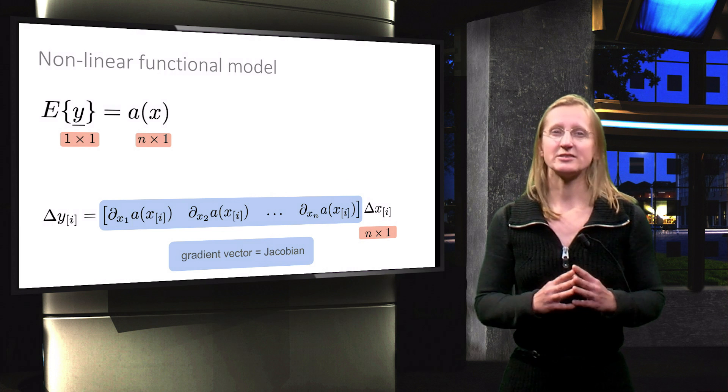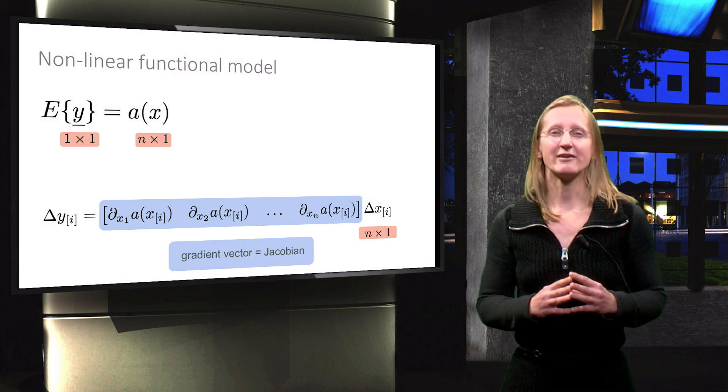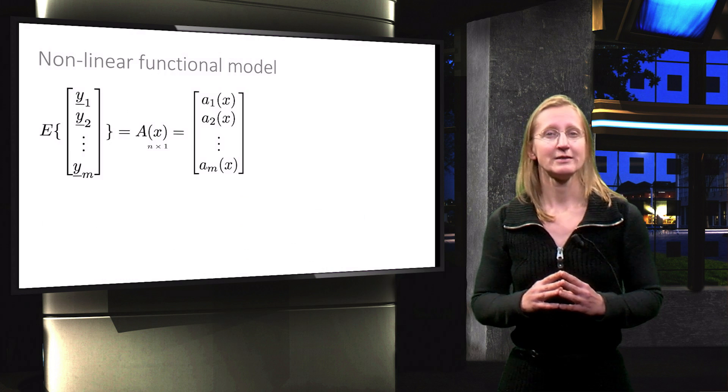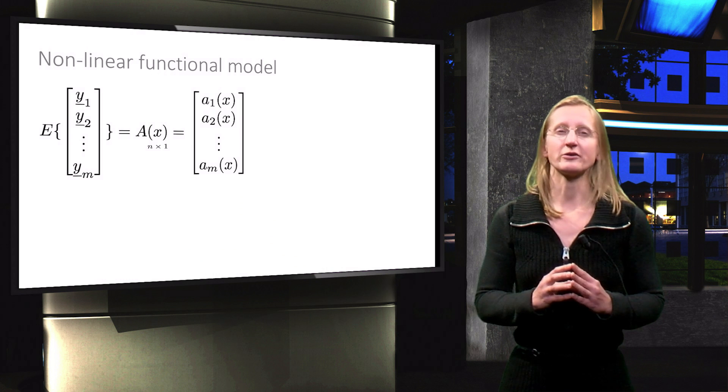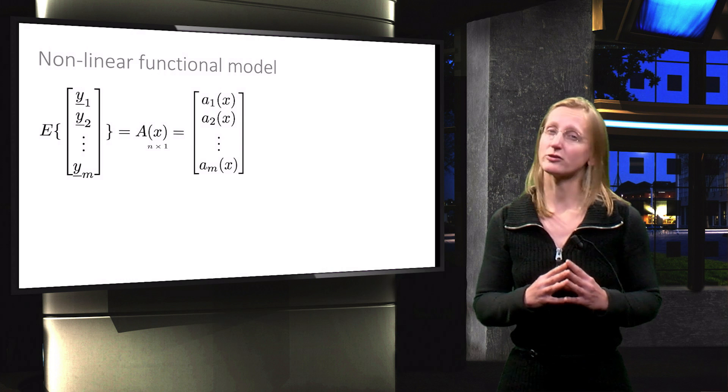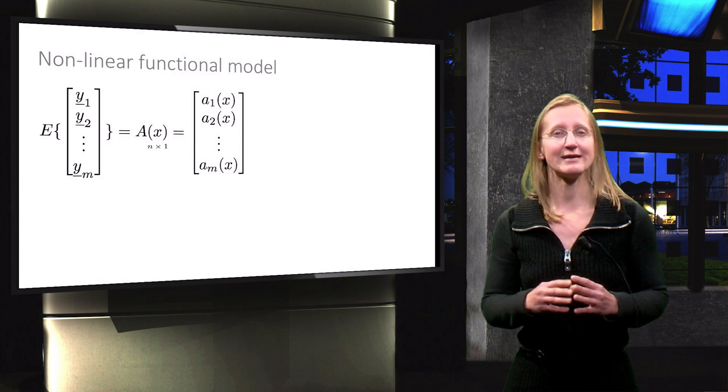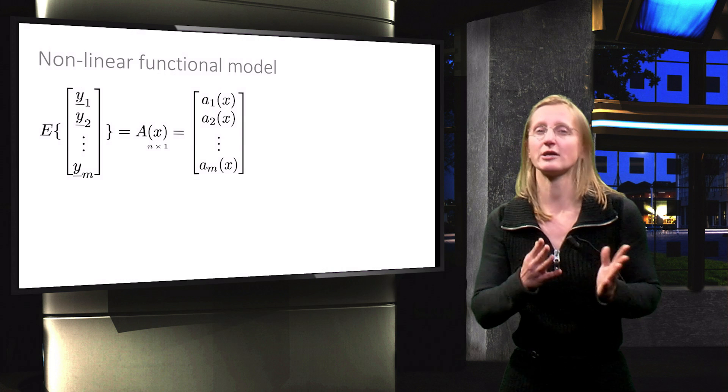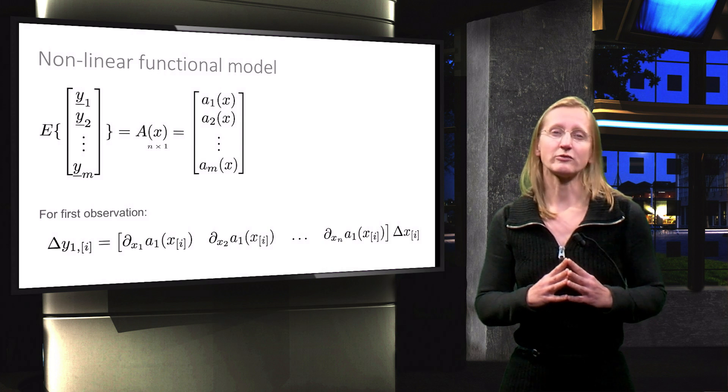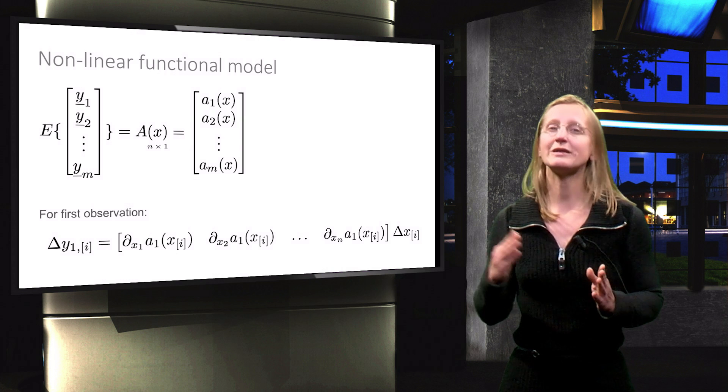Let's now extend this to the general situation where we have m observations and n unknowns. Here we have m different non-linear functions of the n vector x, and for each function we can find the corresponding gradient vector as on the previous slide. For example, for the first observation the expression for delta y becomes now the one shown here.